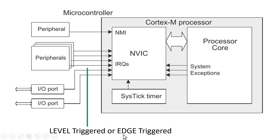Now let us discuss edge triggered interrupt. If the line is configured as edge triggered interrupt, it can be of two types: positive edge triggered interrupt or negative edge triggered interrupt. In a positive edge triggered interrupt line, the usual logic level on the line will be logic 0. Whenever the peripheral wants to interrupt the processor, it will give a positive edge — changing the level from logic 0 to logic 1.